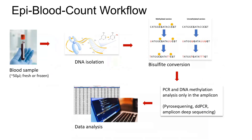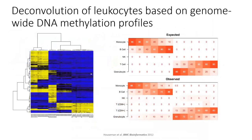The deconvolution of leukocyte subtypes was pioneered primarily by Eugen Haussman's group, who used Illumina BeadChip data to identify significant DNA methylation differences across leukocyte subsets. They identified differentially methylated CpGs and integrated hundreds of them with a non-negative least squares model to perform deconvolution, showing good prediction of leukocyte composition in artificial mixtures of different cell types.